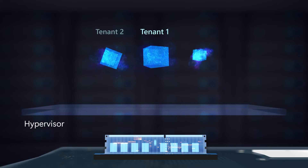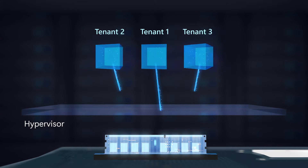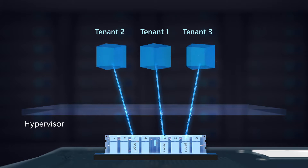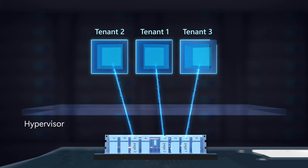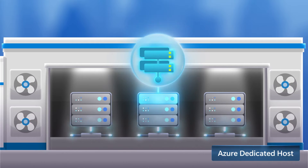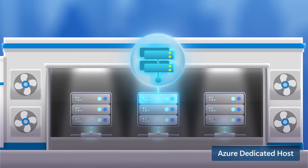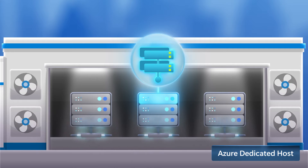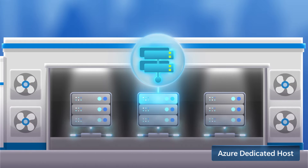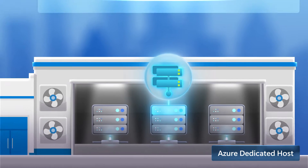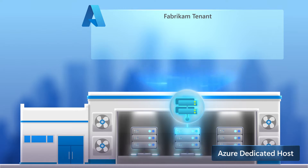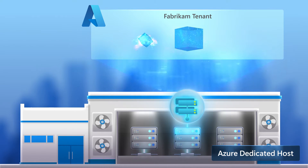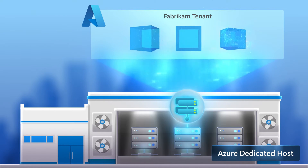Each VM runs isolated from each other via the hypervisor and operates in their own software-defined network. With an Azure Dedicated Host, on the other hand, that same host server in a Microsoft Data Center is dedicated to your organization and it only hosts your VM workloads.